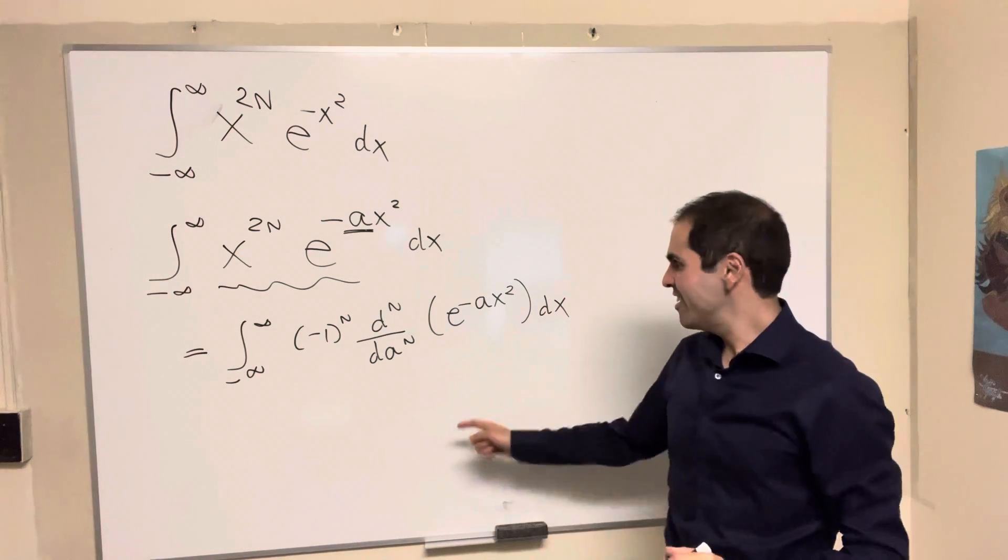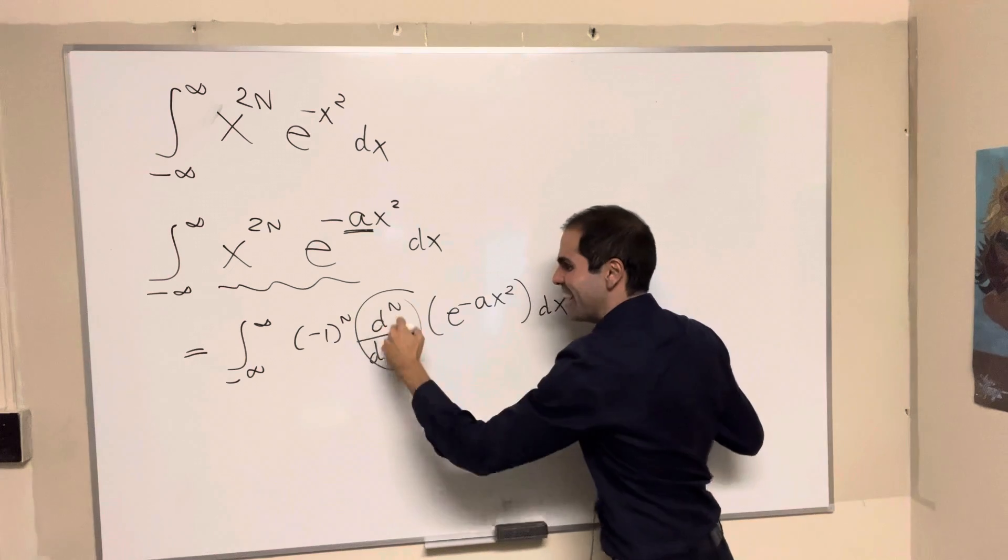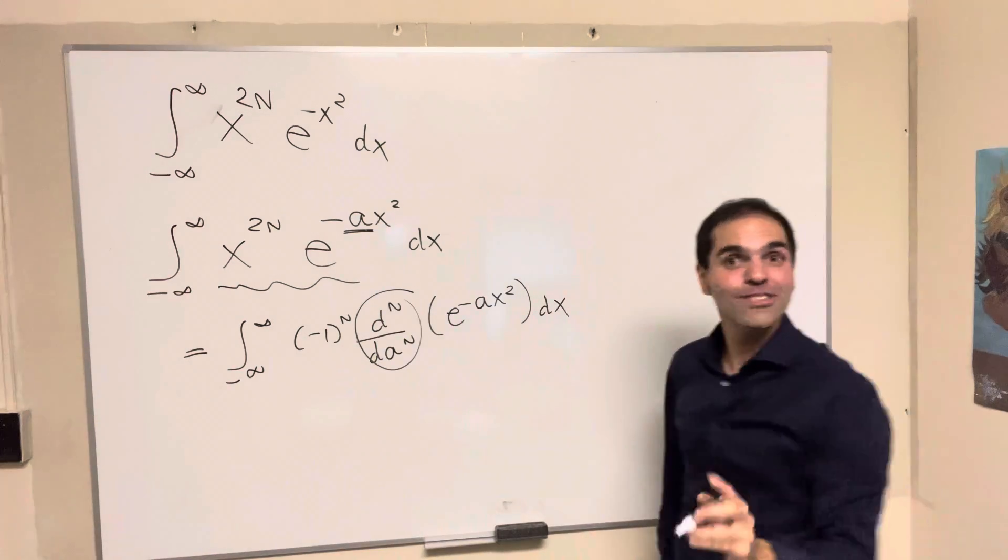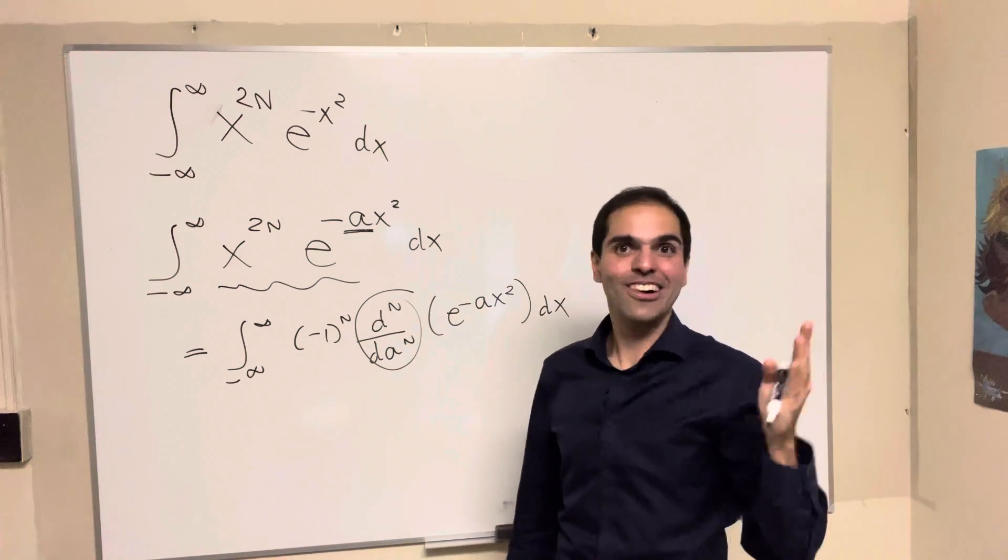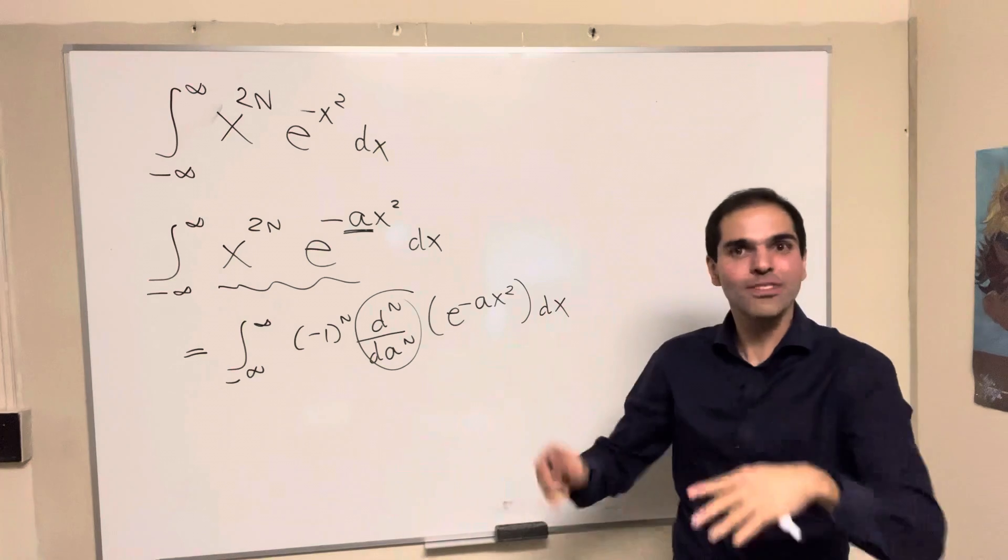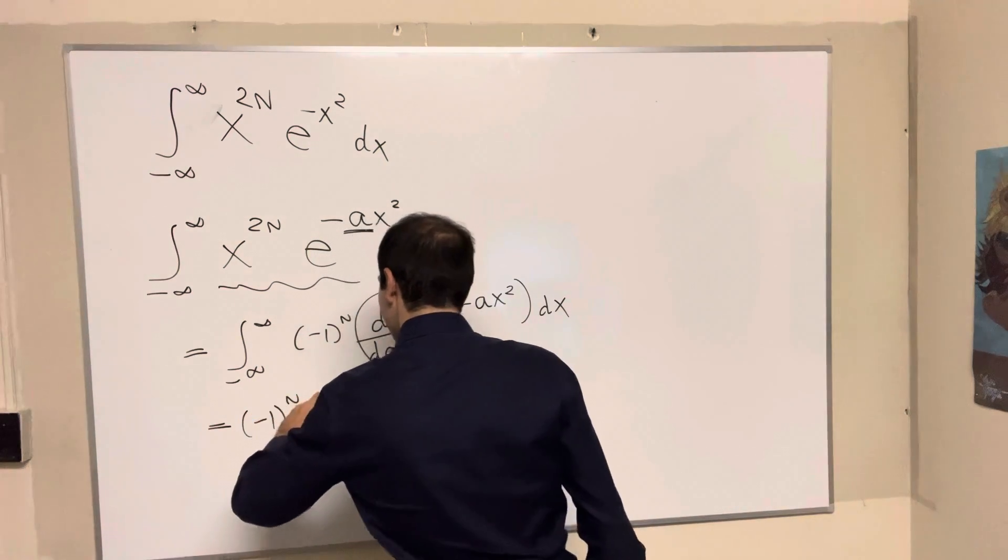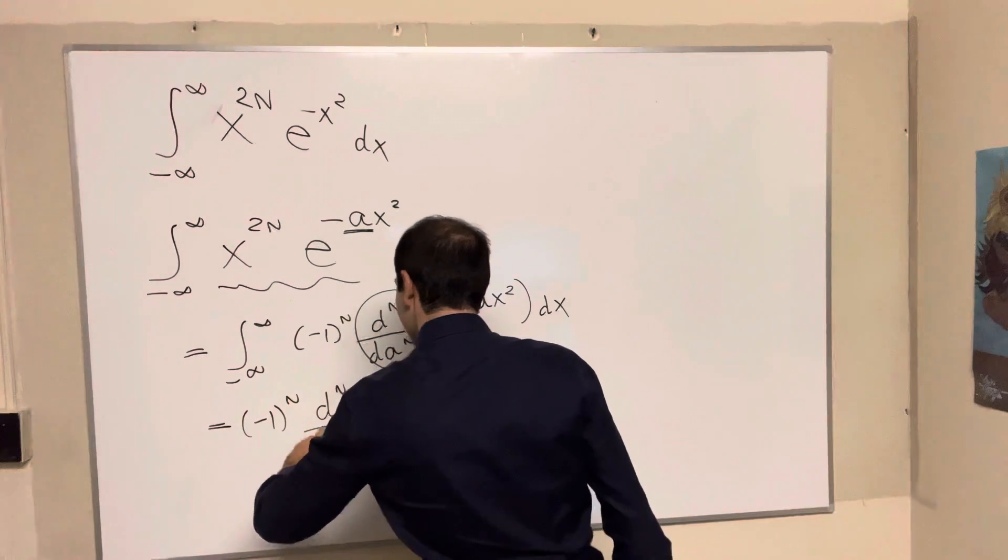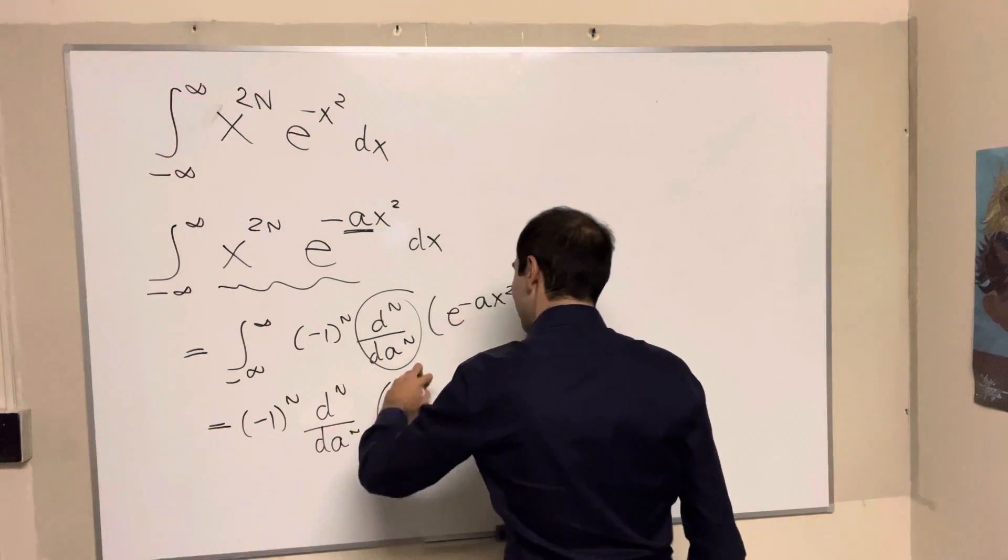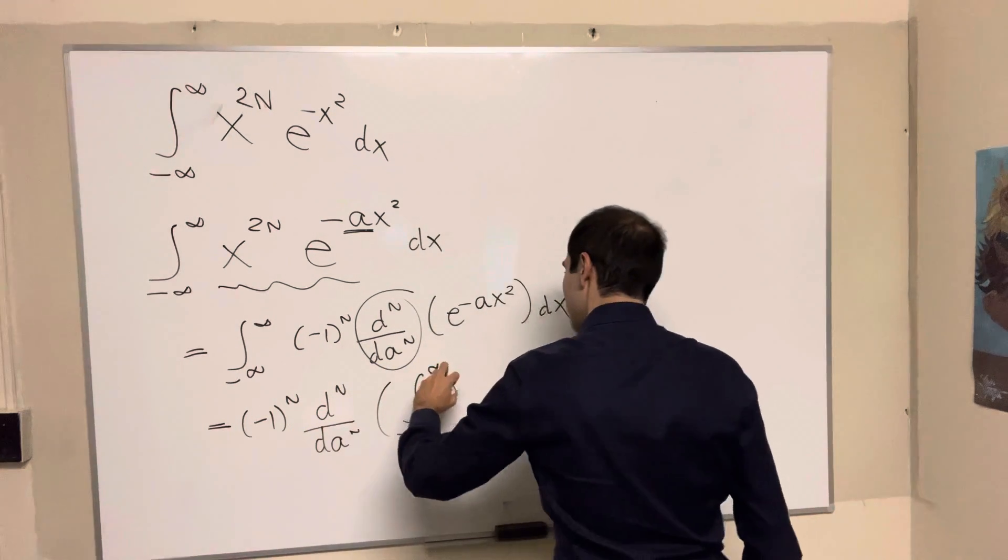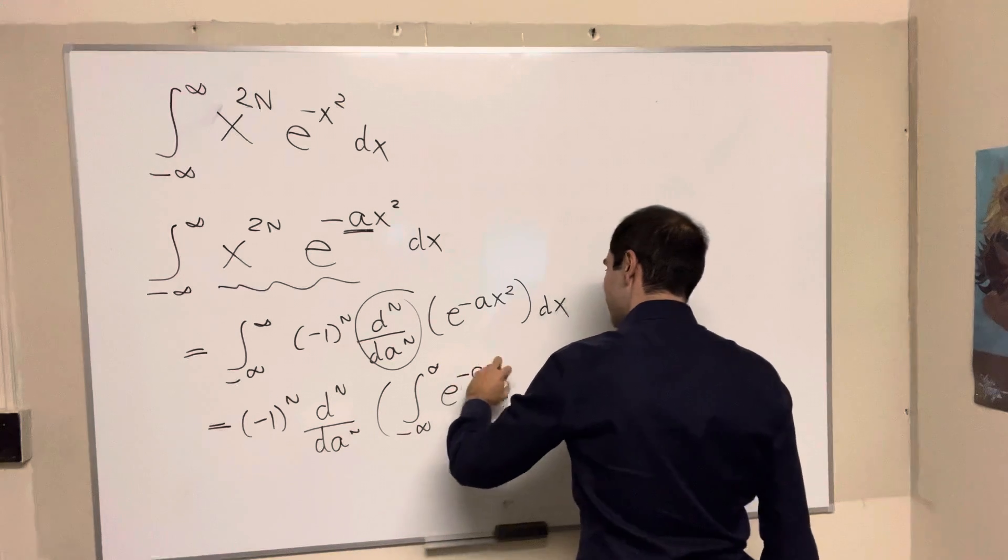And now I'm going to do something very naughty mathematically. I'll pull the derivative out of the integral. Probably some dominated convergence thing going on. And we get minus 1 to the n times the nth derivative of that integral, e of minus a x squared, dx.